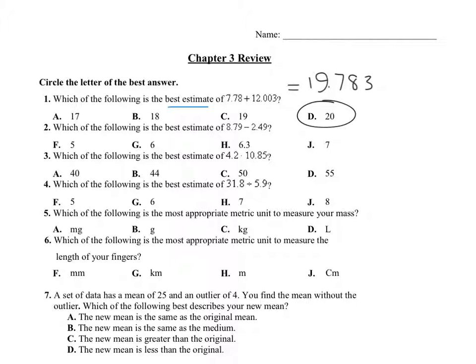20 is the closest to that number. And then two, if I calculate on my calculator 8.79 minus 2.49, the answer is 6.3. So 6.3 is the best estimate.